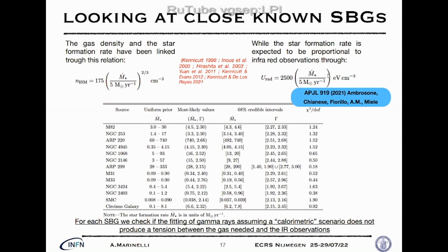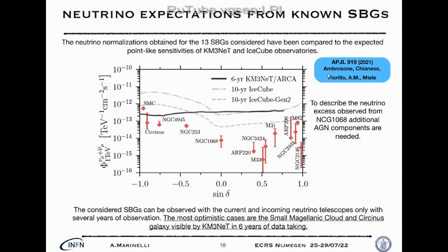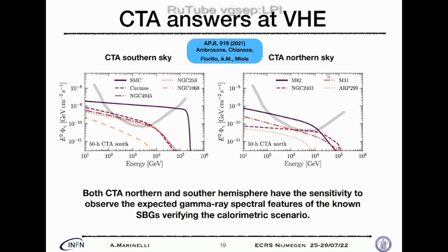We check the normalization obtained from the calorimetric scenario against infrared observations that give us the star formation rate normalization, doing this for all sources. Looking at the expected neutrino flux for individual SBGs, we find interesting cases like the Small Magellanic Cloud and NGC 253 that could potentially be observed by KM3NeT within one decade of observation. We also compare expected gamma-ray fluxes from these sources with the sensitivity of CTA for both the southern and northern hemispheres.